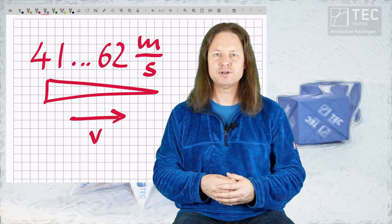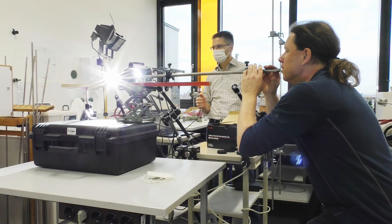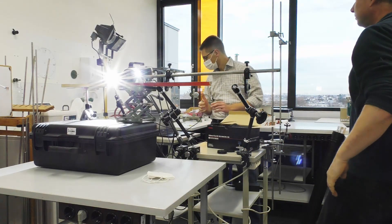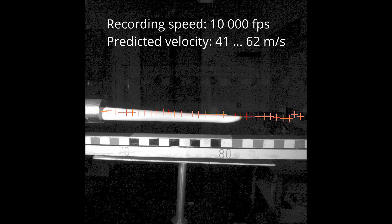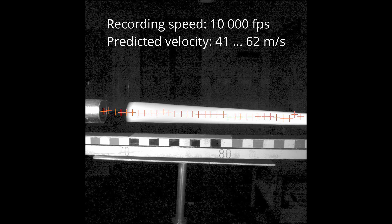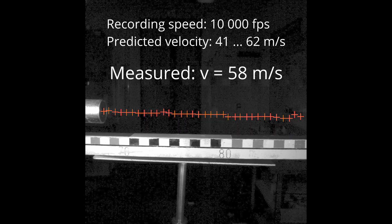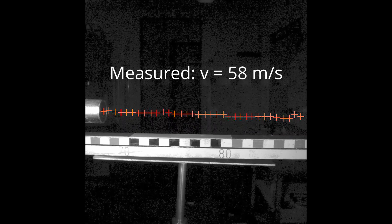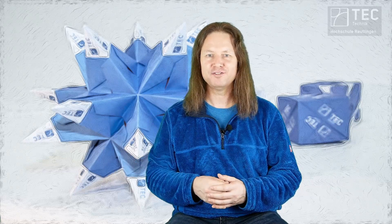Let's do an experiment with a high speed camera to find out if our calculations are correct. In our lab experiment we measured a muzzle velocity of 58 meters per second. And that's right within the range we predicted theoretically. This is why I love physics.